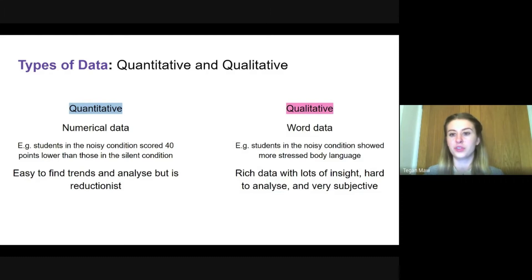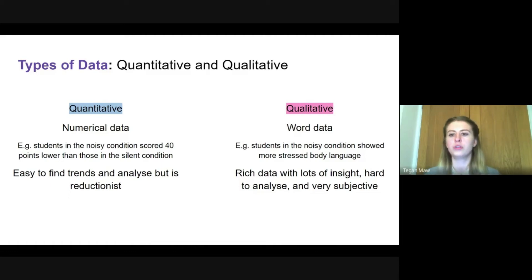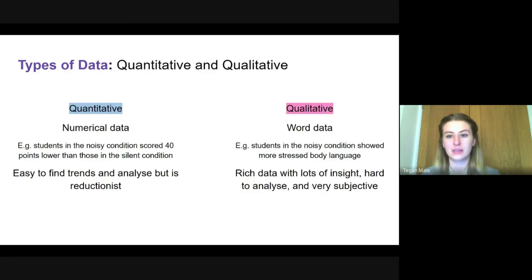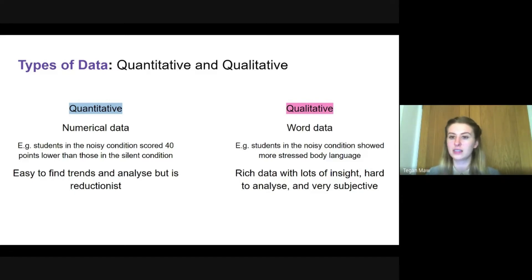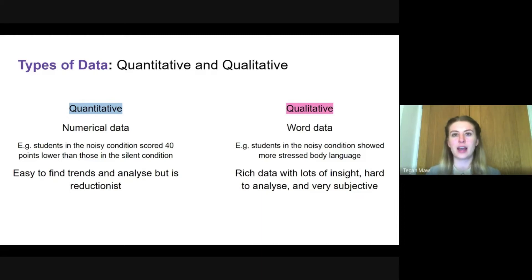The other type of data is qualitative — this is word data. For example, we could record the body language students show: they might have their head in their hands, suggesting stress, or arms folded. We could label the body language they're showing, and that would be qualitative data. An advantage is that it provides rich, in-depth data with lots of insight. However, it is quite hard to analyze and very subjective — meaning it's open to interpretation and personal opinion, so two psychologists might reach very different conclusions.